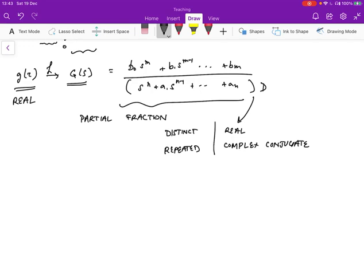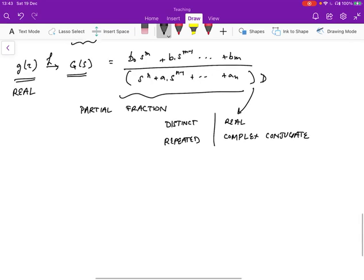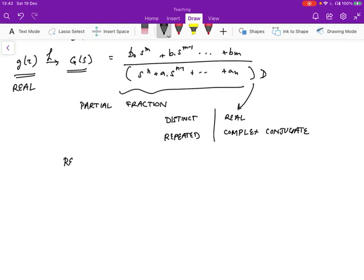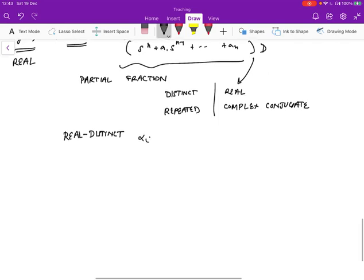And so we have to look at each of these separately. Now, let's look at real and distinct. So when you have a real distinct root, let's say alpha i, then in the partial fraction expansion, we're going to get something like ai over s minus alpha i, because in partial fractions, for each root, you're going to have something like this in the denominator, and a is some expression.